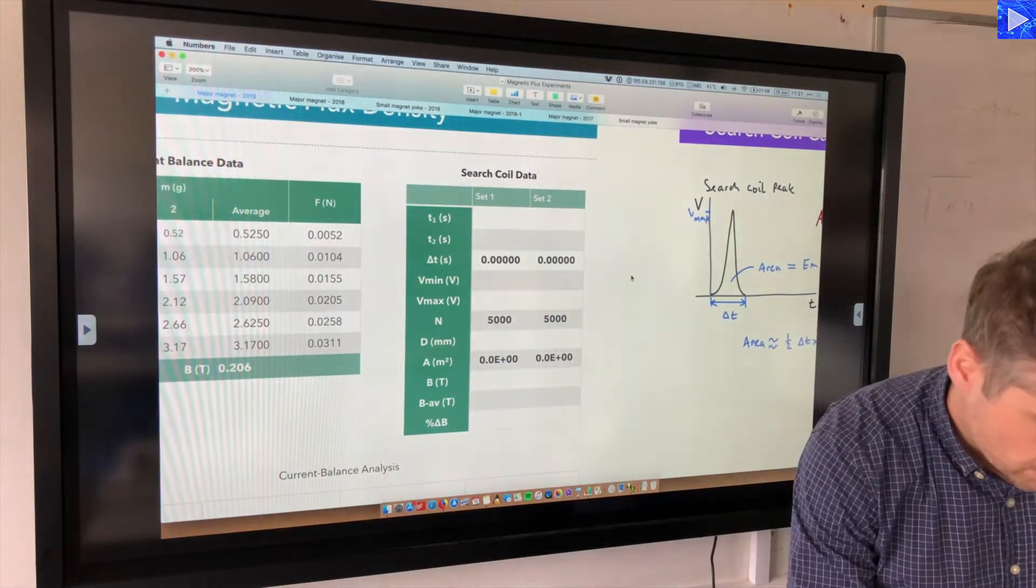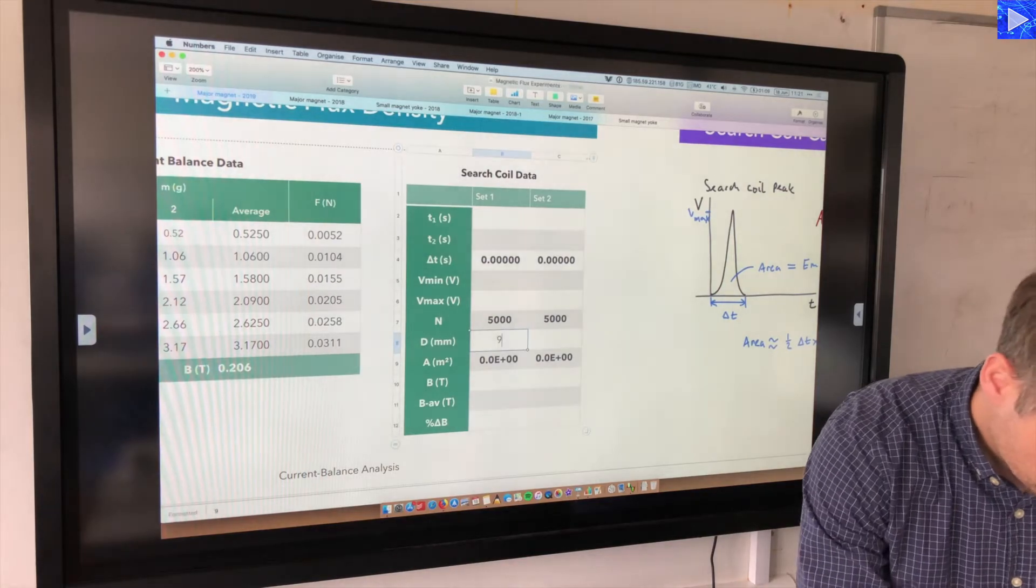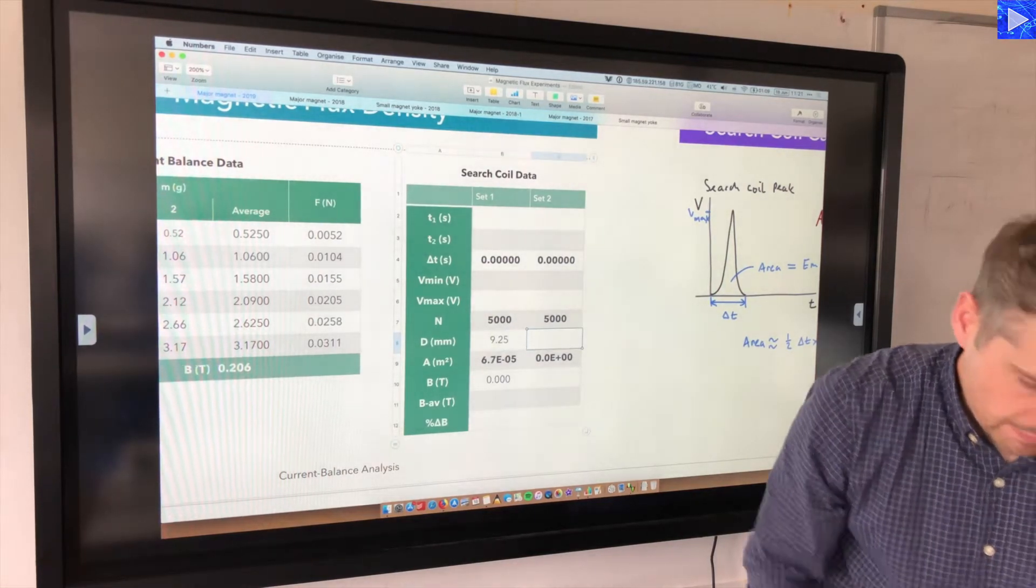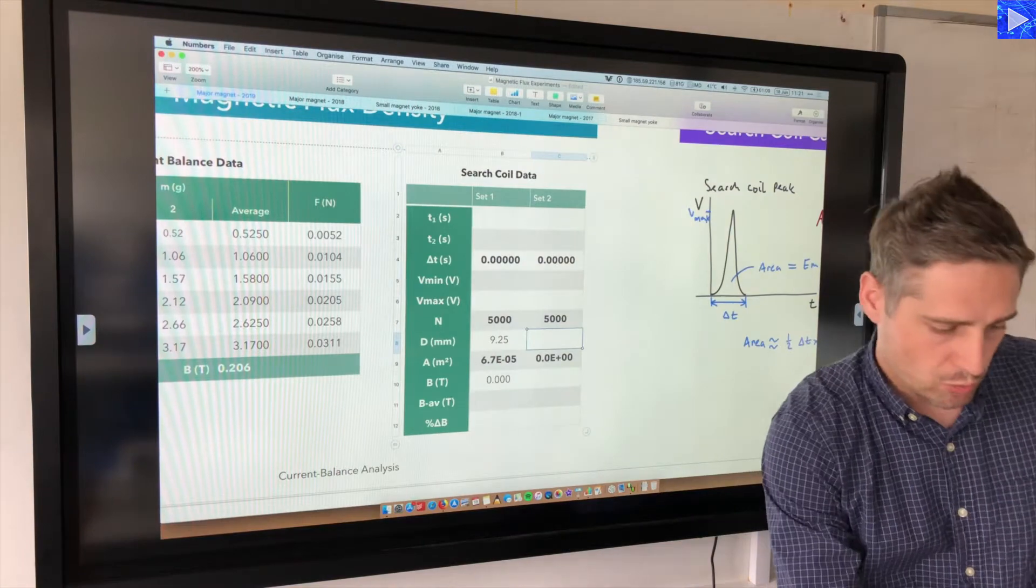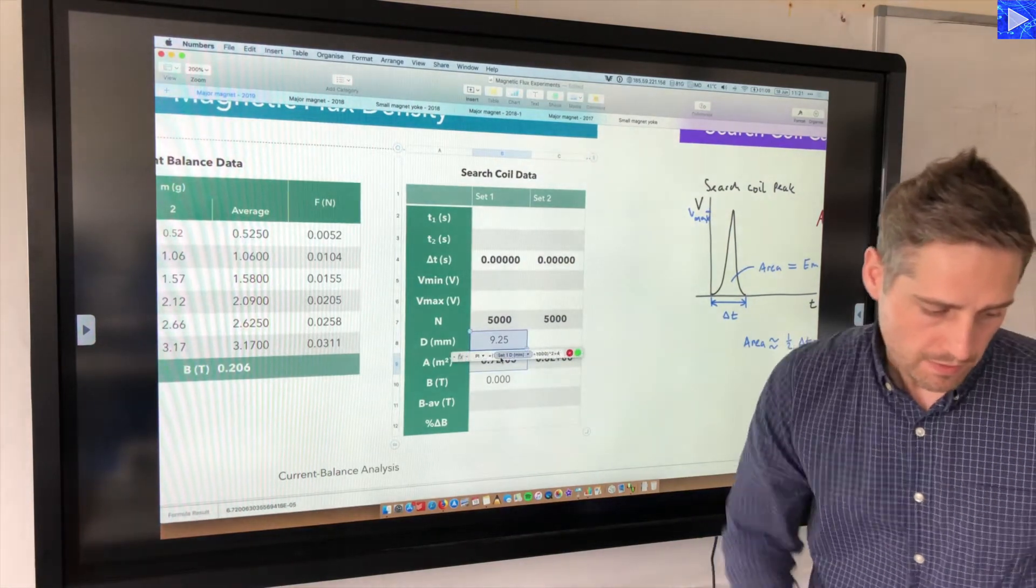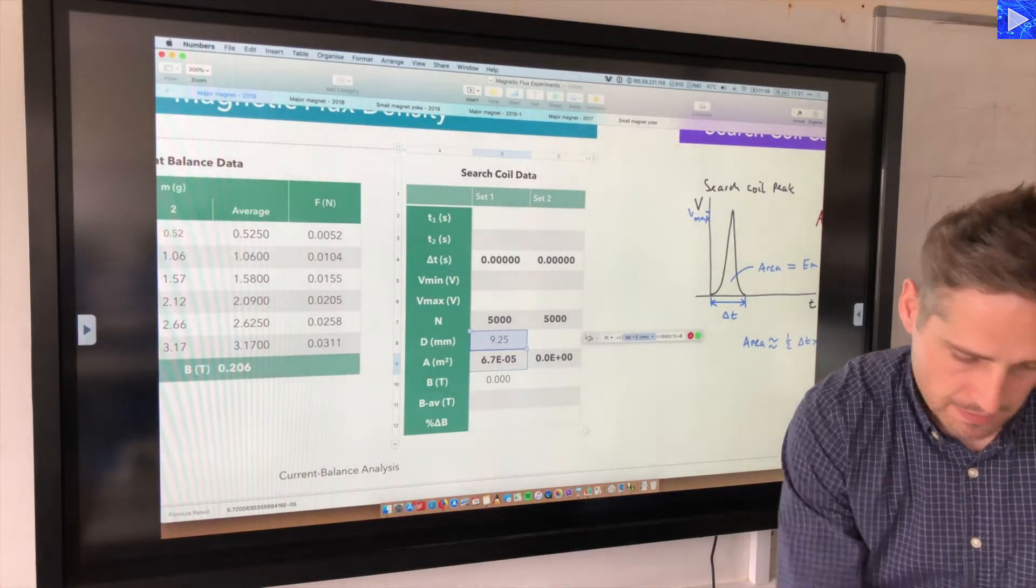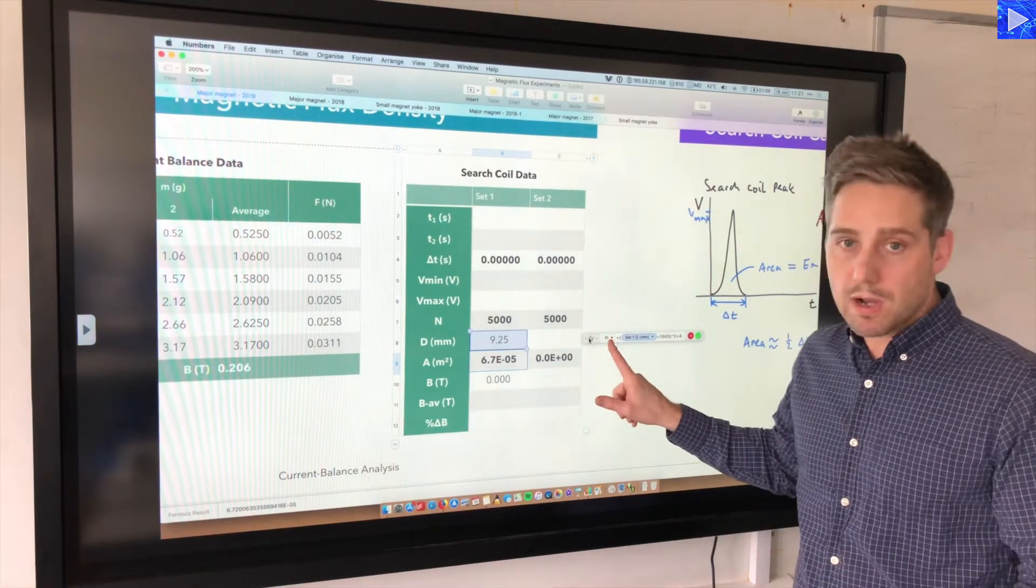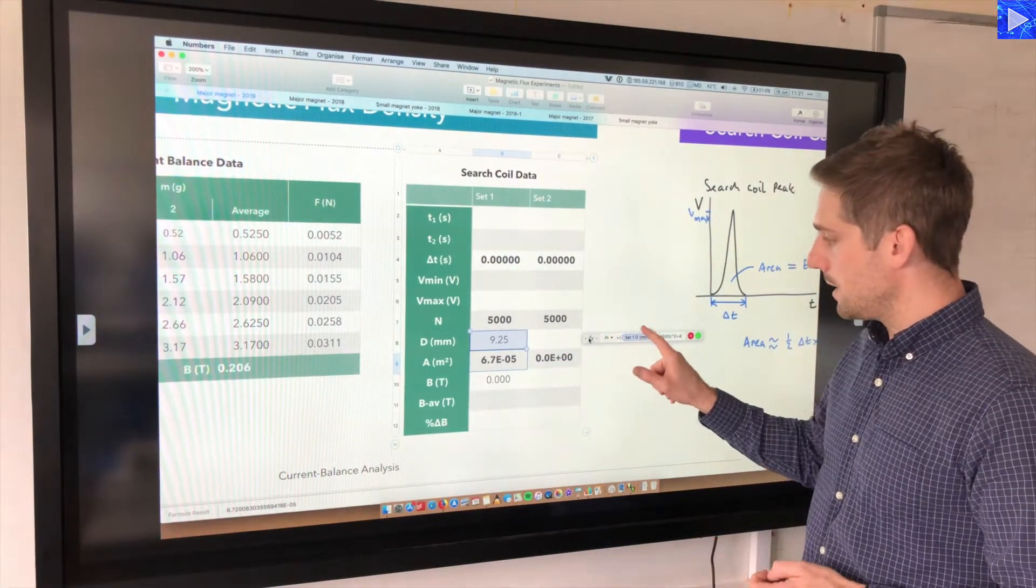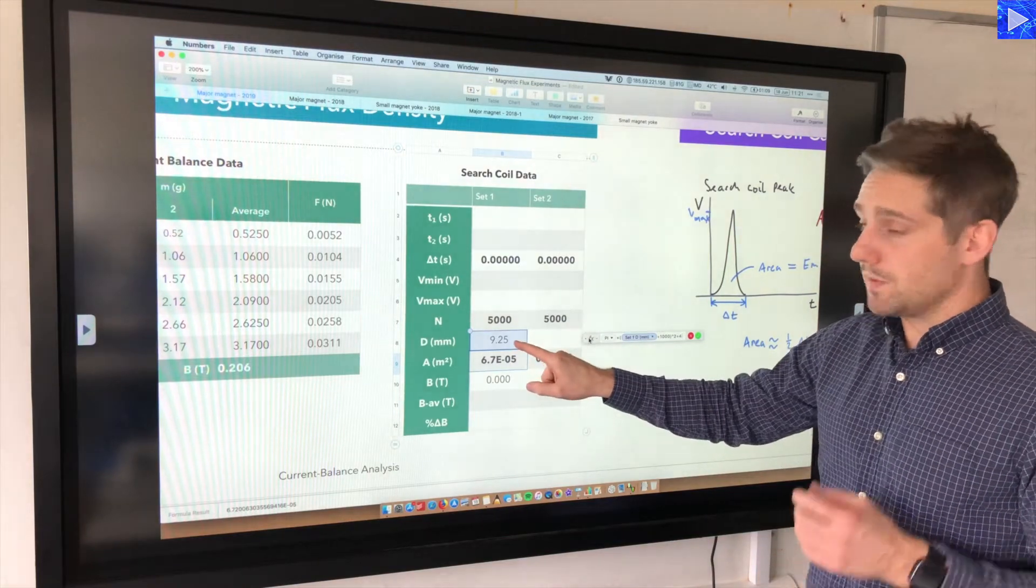This is the search coil. I'm putting my diameter in here in millimeters, so I just put in the raw value, 9.25, and this automatically calculates the cross-sectional area in meters squared.